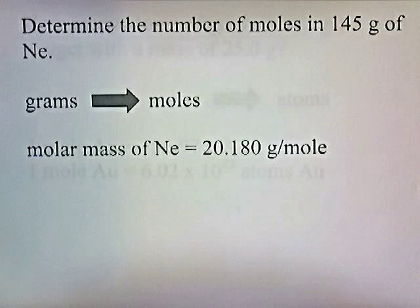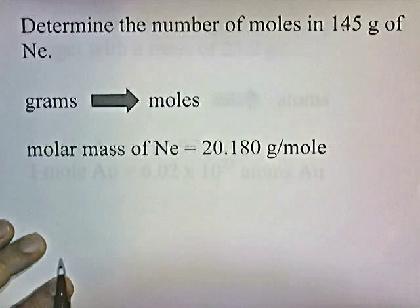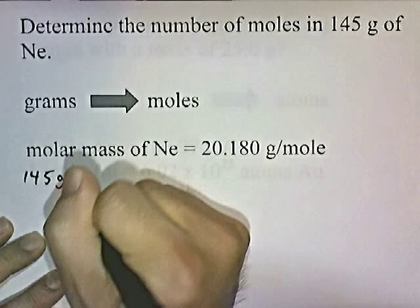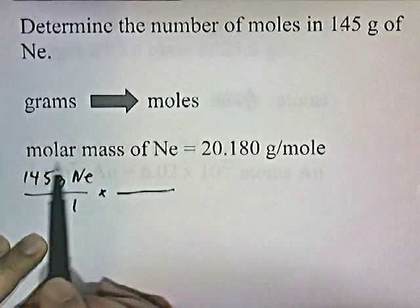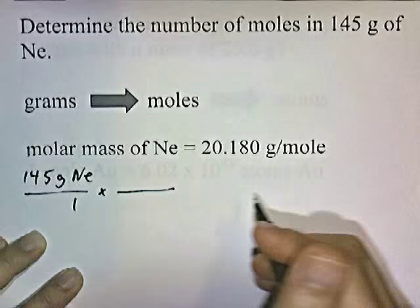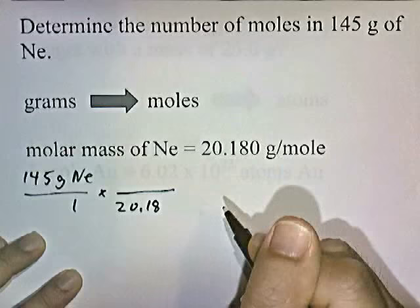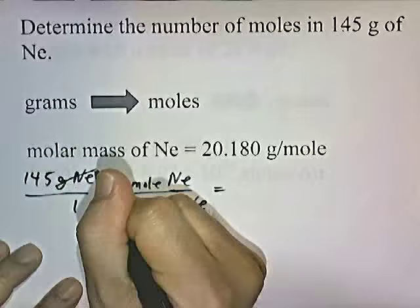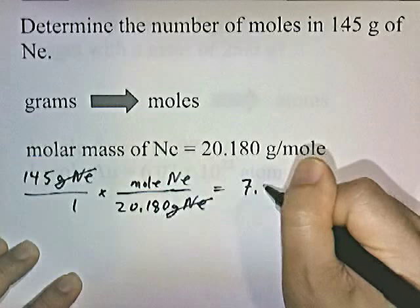Determine the number of moles in 145 grams of neon. Again, we're given grams and we're trying to convert to moles. The molar mass of neon — one mole of neon weighs 20.18 grams. So 145 grams of neon over 1. I have grams of neon and I want to go to moles, so I want to get rid of grams of neon. I put 20.18 grams of neon on the bottom, equivalent to a mole of neon on top. Grams of neon cancel; we're left with moles of neon. We'll get a rounded answer of 7.19 moles of neon.